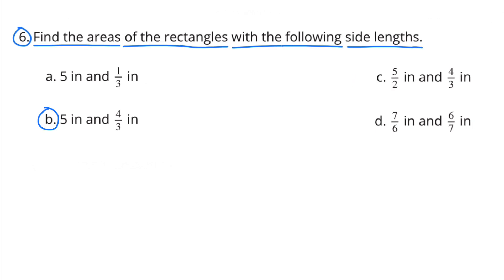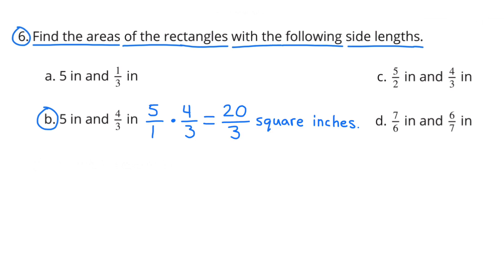B: 5 inches and 4/3 inches. 5/1 times 4/3 equals 20/3 square inches.